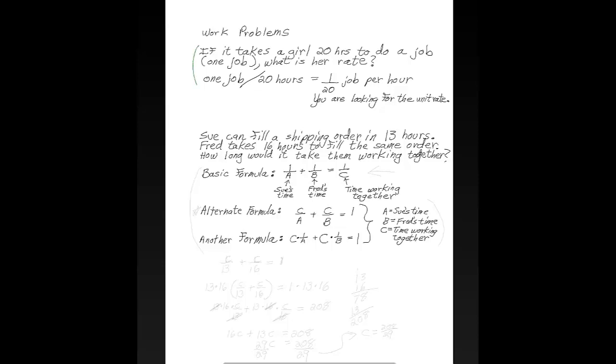Let's look up here. If it takes a girl 20 hours to do a job, that's one job, what is her rate? Well, her rate is one job per 20 hours. This is the same as one-twentieth of a job per hour. This is the unit rate. Remember doing unit rates in pre-algebra?